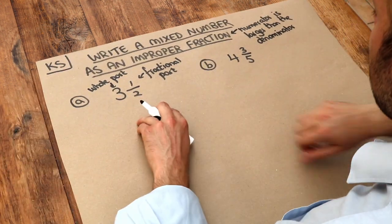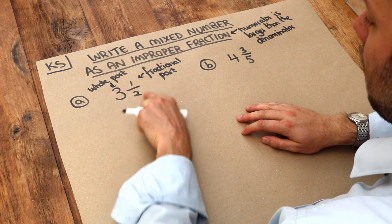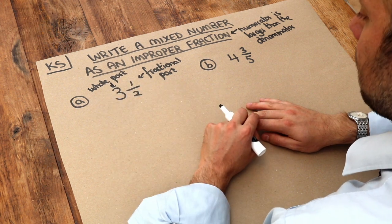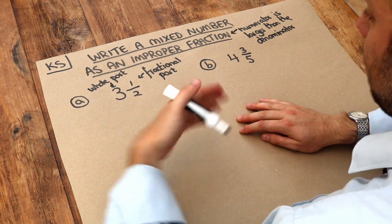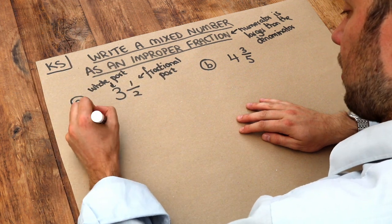Now I'm going to first do this visually and hopefully you'll see how we can convert this to an improper fraction. So we've got three and a half, say, pizzas.